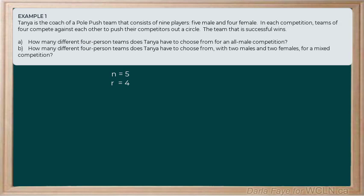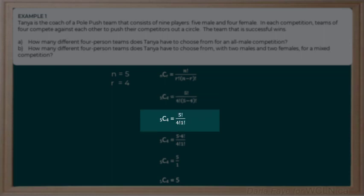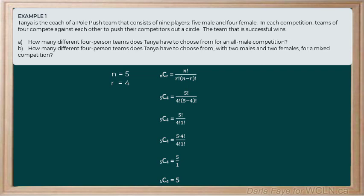This is a simple situation, so we can just use the nCr formula: n factorial over r factorial multiplied by the difference of n and r factorial. With n equal to five and r equal to four, we get five factorial divided by four factorial times one factorial. Four factorial cancels out, and we're simply left with five over one, which results in five possible combinations — five possible four-person teams for the all-male competition.